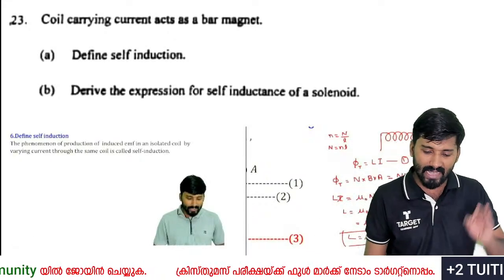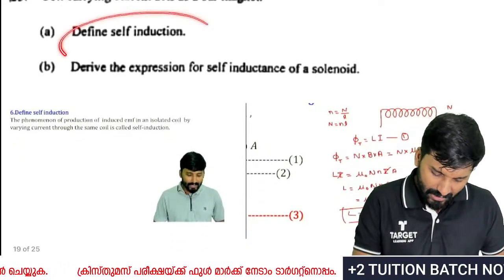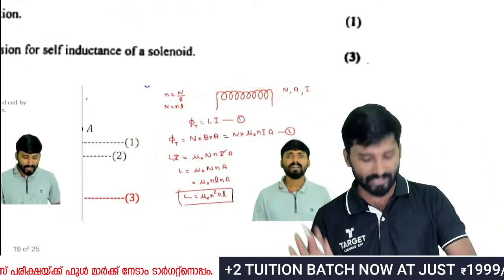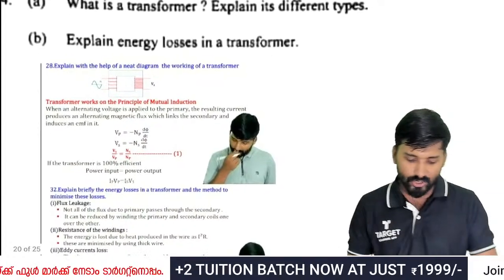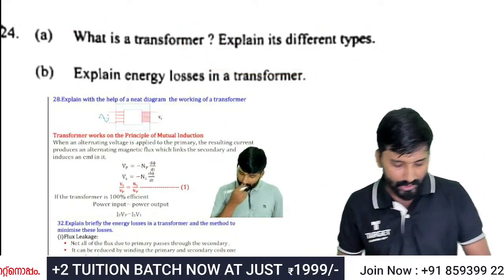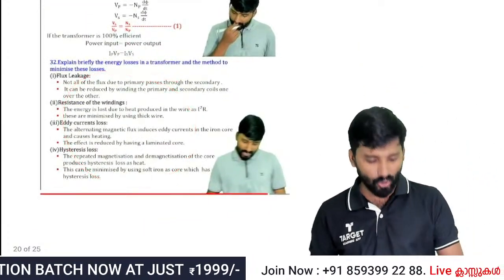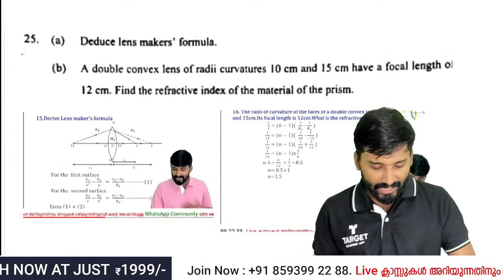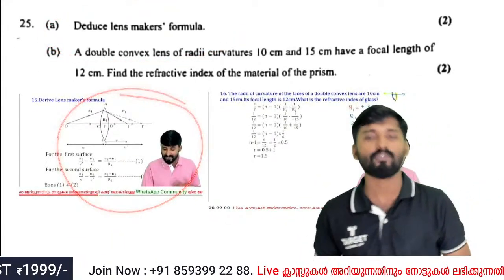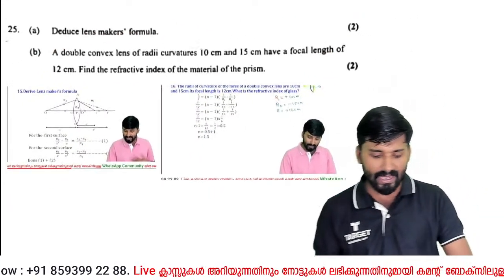A coil carrying current acts as a bar magnet. Define self-inductance and derive the expression for self-inductance. Also: what is a transformer, what are the types of transformers, and explain energy losses in a transformer. The lens maker's formula is also very important — problem number two.